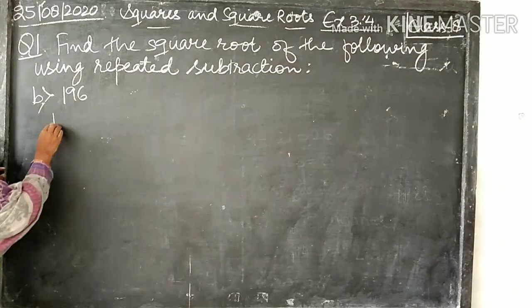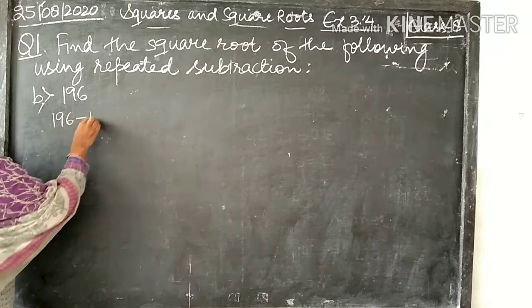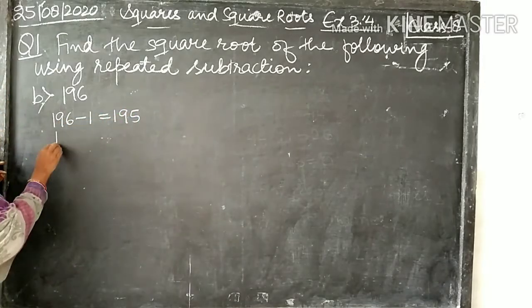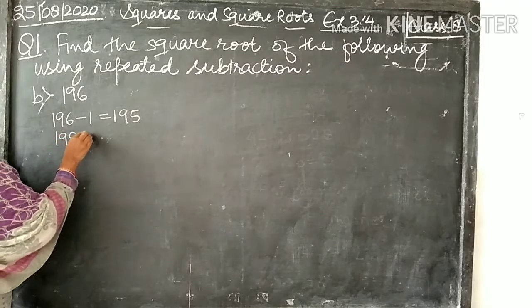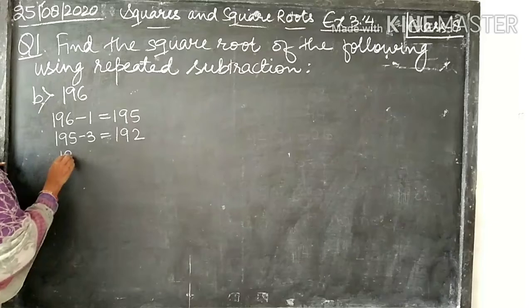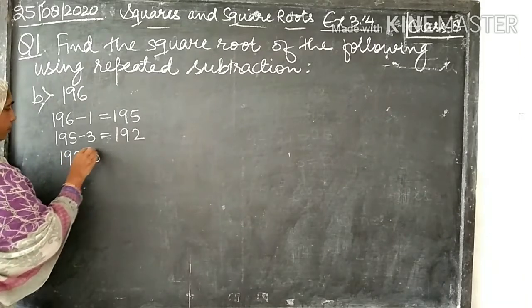To find the square root of 196, start with 195. 195 minus 3 equals 192, minus 5.